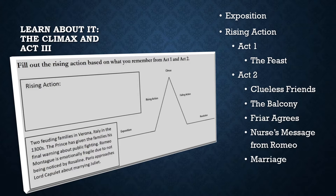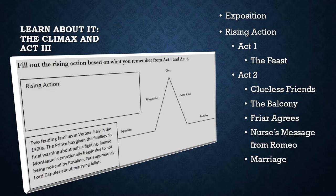Act 2 begins with Mercutio and Benvolio becoming separated from Romeo after the party — they still believe he is upset about Rosaline. Then we have the balcony scene, where Romeo finds Juliet's balcony and confirms her mutual feelings. In this famous scene, the lovers plan marriage, even though their families may not approve. Friar Lawrence is collecting herbs when Romeo approaches him about wedding Juliet; he reluctantly agrees, hoping to unite the feuding families. The nurse delivers the marriage plans to Juliet — plans that are secret to both parents. Finally, Friar Lawrence marries Romeo and Juliet in a secret ceremony, but warns them about possible violence.